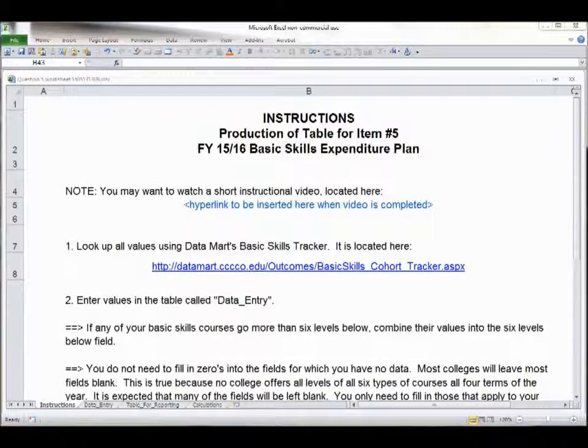This is a spreadsheet that's available to help you with item number five in the fiscal year 15-16 basic skills expenditure plan. There are four tabs: instructions, data entry, table for reporting, and calculations.